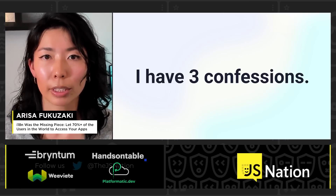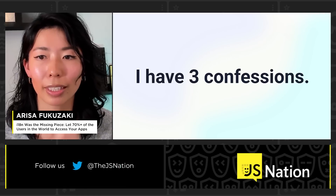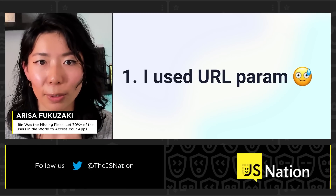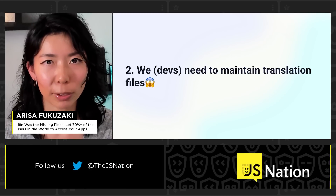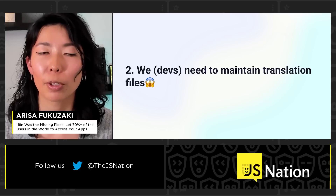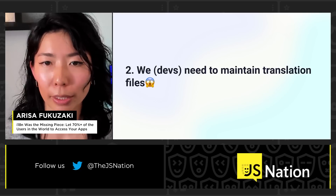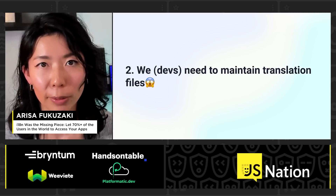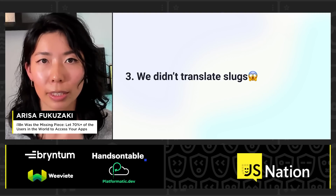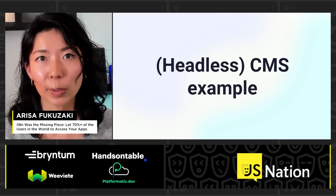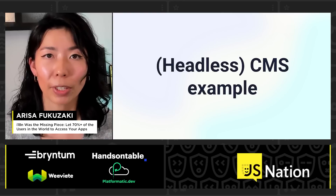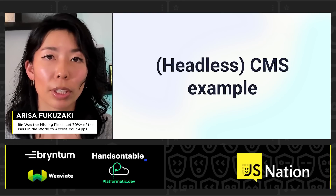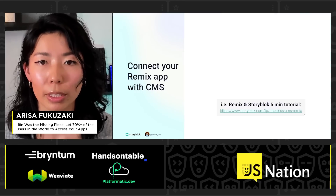If you noticed a couple of things, I have three confessions. First, if you paid attention to the URL, I used URL parameters, which I wanted to avoid. Second, we developers need to maintain the translation files manually. And lastly, we didn't translate the slugs. So to clean up everything we haven't yet achieved, let's look at another example using a content management system.